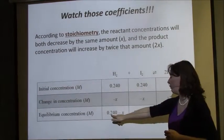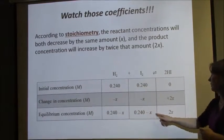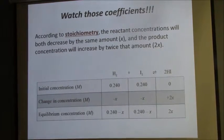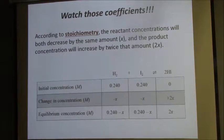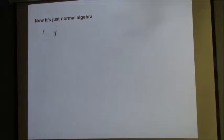So at equilibrium, we're going to have 0.24 minus X, 0.24 minus X, and then 2X. Now all we need to do is solve for X using our equilibrium expression and the value of K that we were given. Just regular algebra from here. However, one more thing to watch out for.